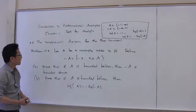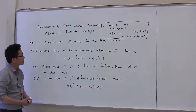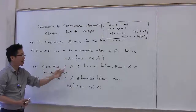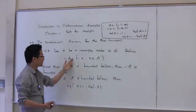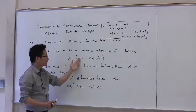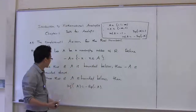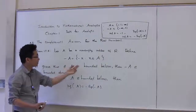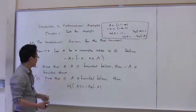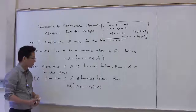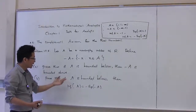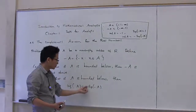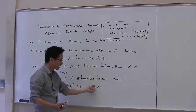We're going to work on problem 1.5.5 from the textbook. Let A be a non-empty subset of R, and define minus A as follows: minus A consists of all elements minus x, where x runs in A. In the first part of the problem, we have to prove that if A is bounded below, then minus A is bounded above. In addition, we have to prove that if A is bounded below, then the infimum of A is equal to the supremum of minus A.